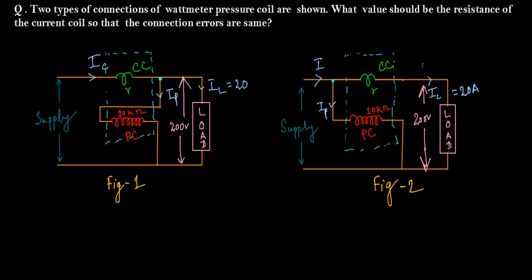The pressure coils are connected differently in these two connections as I discussed in my previous lecture. Now what value should be the resistance of the current coil so that the connection errors are same? In the previous lecture I showed that if we connect the pressure coils in these two different manners, this connection has PC at load side and for this connection current coil or CC is at load side.